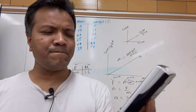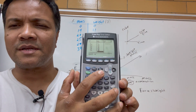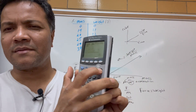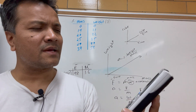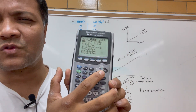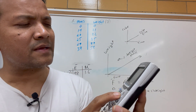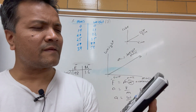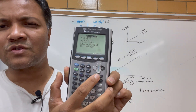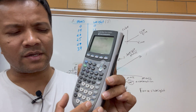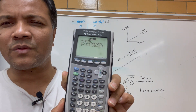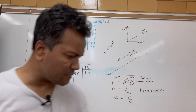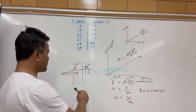Now go to STAT again, tap the right arrow to go to CALC (Calculation), then select option 4 — Linear Regression. Hit Enter, then scroll down to Calculate and hit Enter. It gives you the slope, which is 1.6.